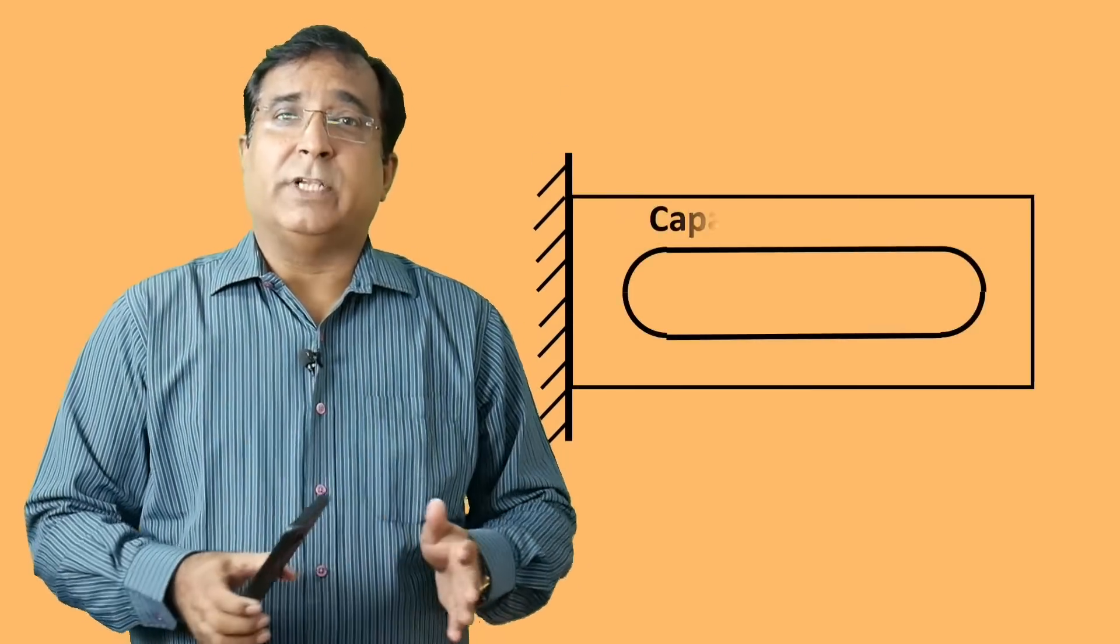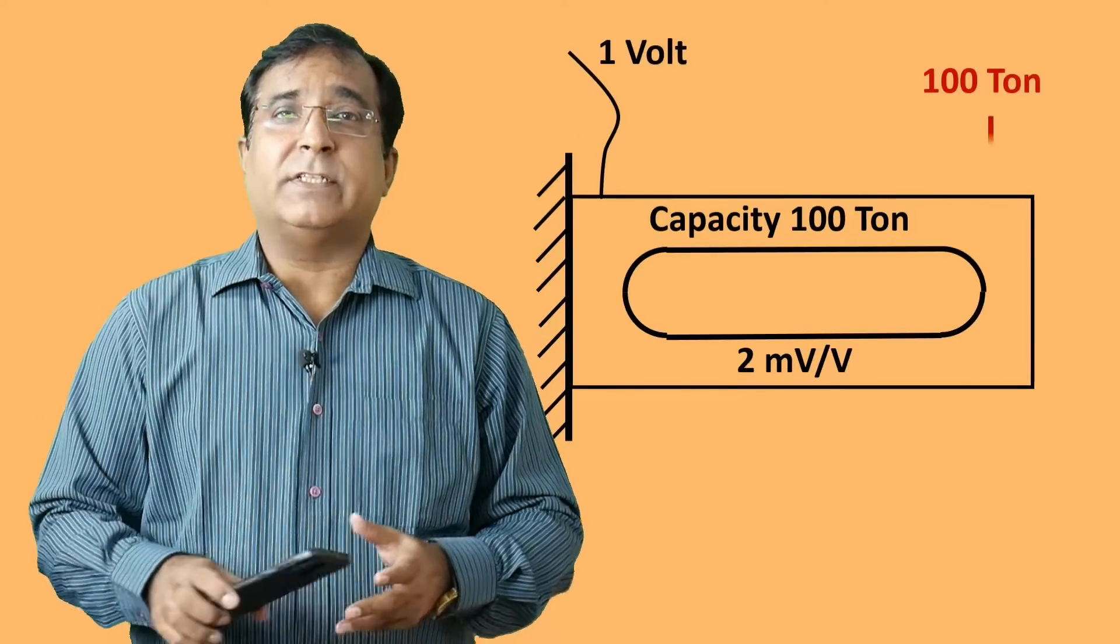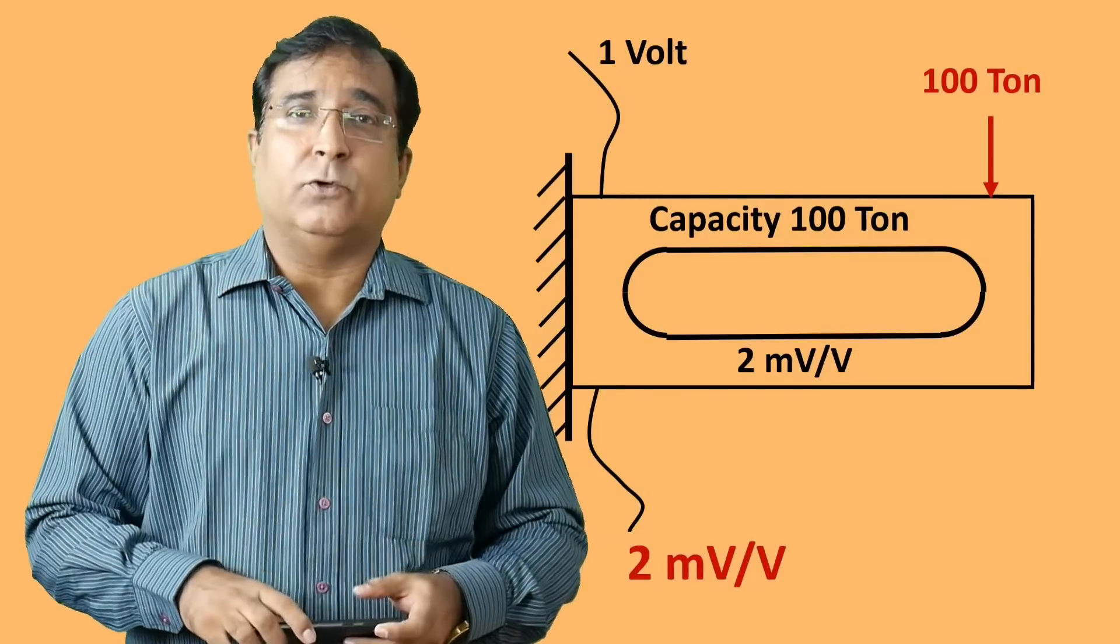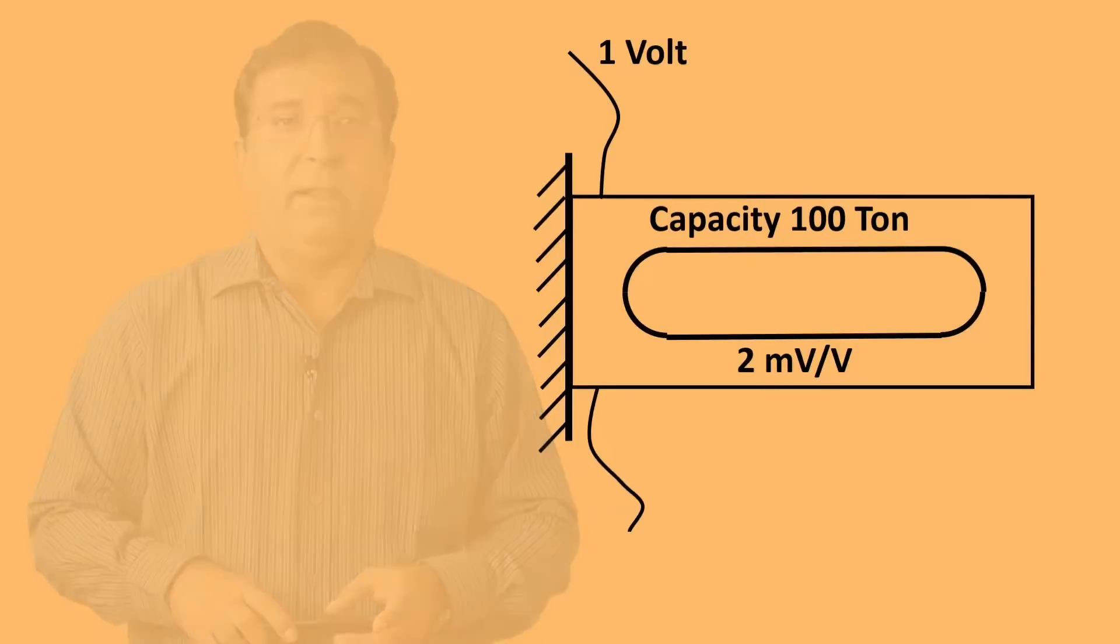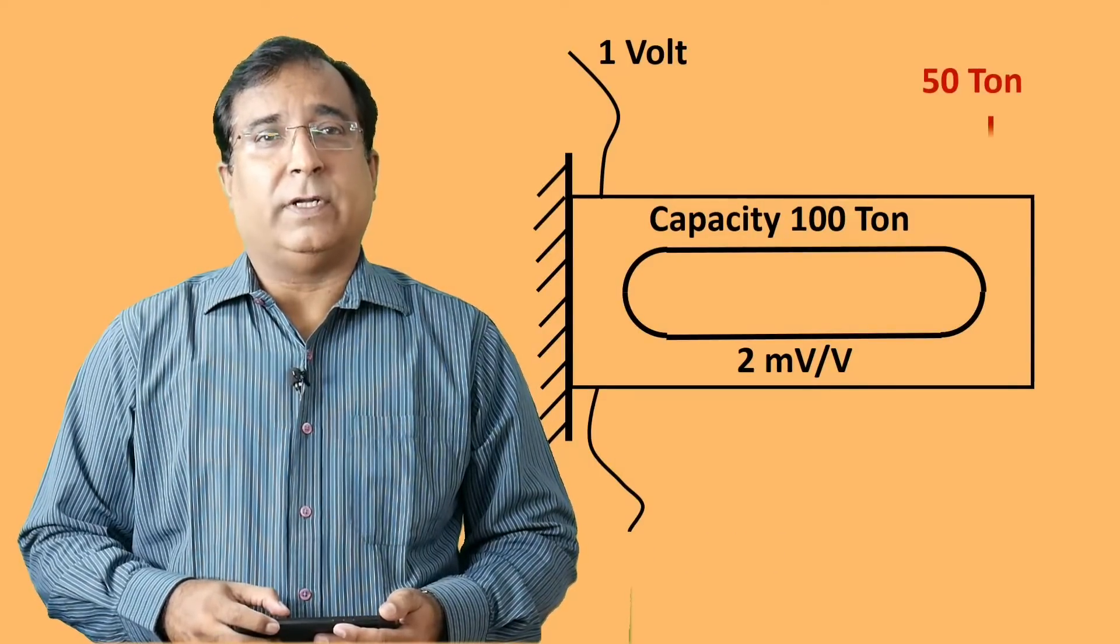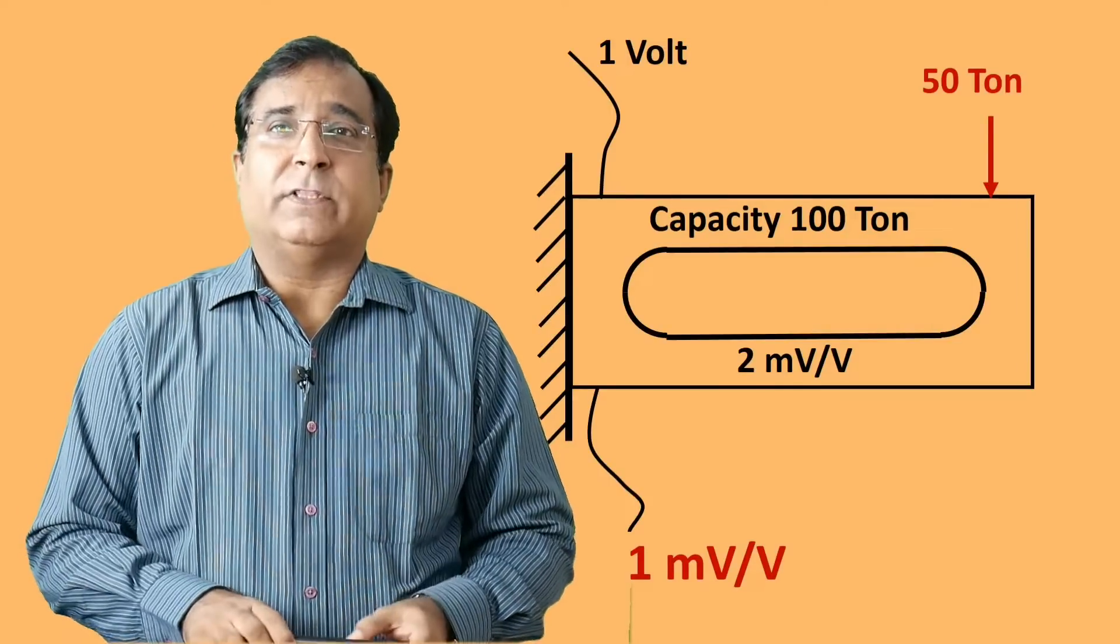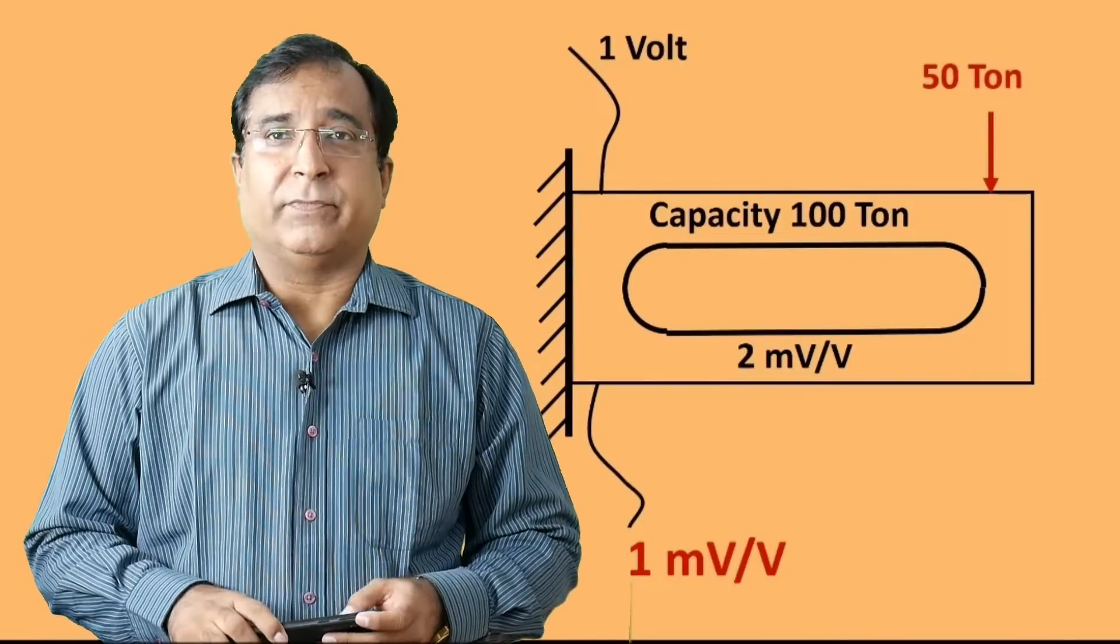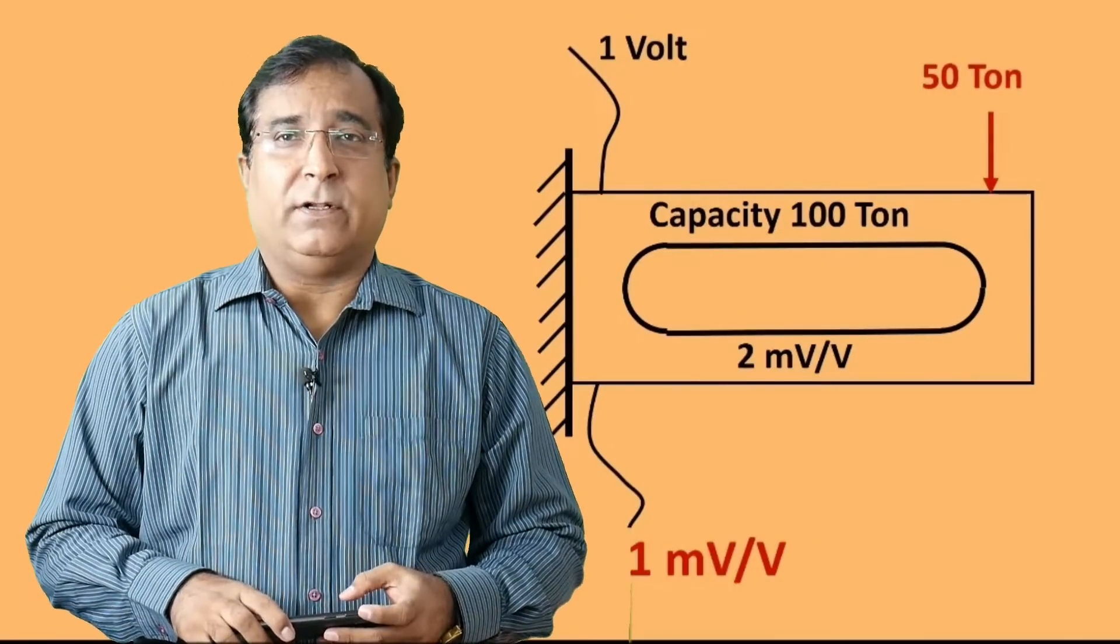Now suppose you have a load cell whose sensitivity is 2 millivolt per volt and capacity is 100 tons. If it is supplied with 1 volt excitation voltage, so at 100 tons 2 millivolt output will be from the load cell and if load is reduced to 50 ton then it will produce 1 millivolt at the output. Simple math. So by measuring this millivolt with a multimeter you can have a fair idea of what load it is sensing. So this funda will help you while troubleshooting of a load cell.